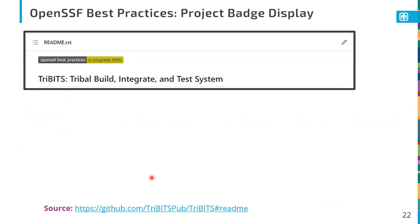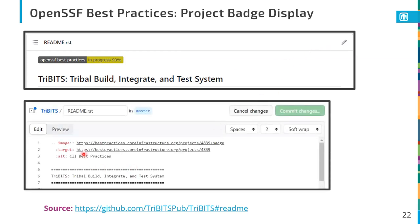Once your project has created an entry in the badge app, you can display that badge on your various project websites. This is inside the readme file on the GitHub page for the Tribits project, showing that I'm achieving 99% on my way to a best practices badge. Looking at the edit view, this is in restructured text — there are also Markdown examples available. It provides two different links: one that generates the badge image, and another that is the target link. You'll see a lot of places that still say 'CII Best Practices' — that was the old name — it's now called the OpenSSF Best Practices.